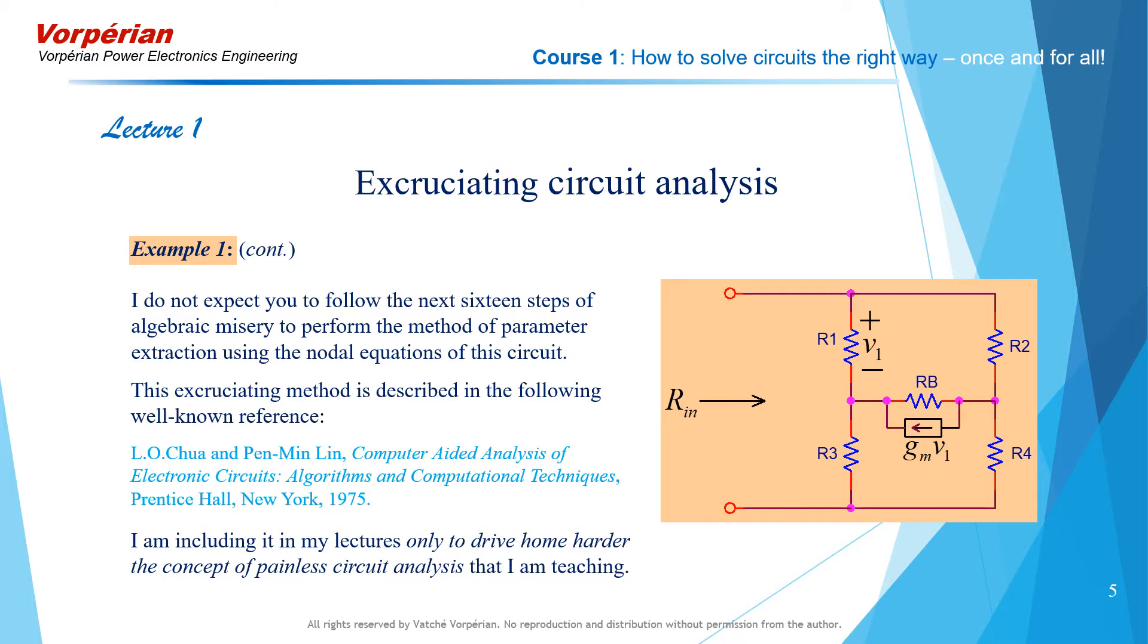I'm going to leave all the components in symbolic form in contrast with the example worked out in this reference, where the authors assign numerical values to each of the resistors and only leave gm in symbolic form.